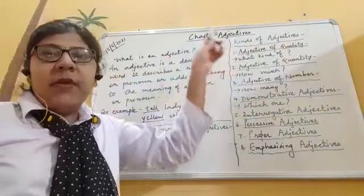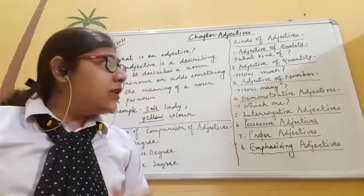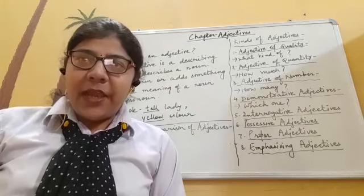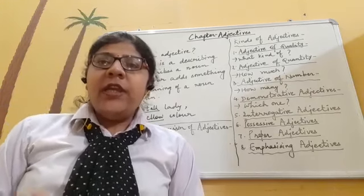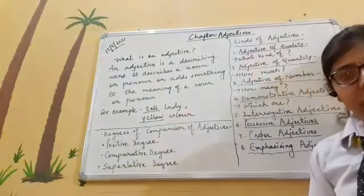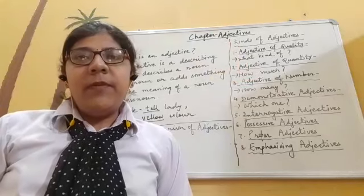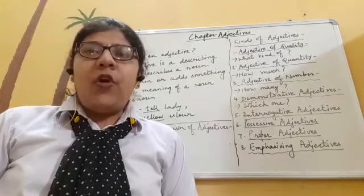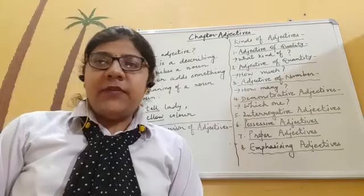Adjectives are also called describing words — they tell us something more about the noun or pronoun. Now let's discuss the kinds of adjectives. The first kind is adjective of quality. Those adjectives which tell us about the quality of a noun or pronoun are called adjectives of quality. To identify them, we question with 'what kind of.' For example, 'what kind of lady?' — tall. So 'tall' is an adjective of quality.